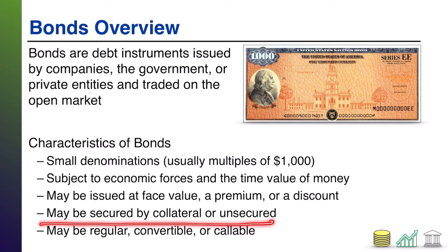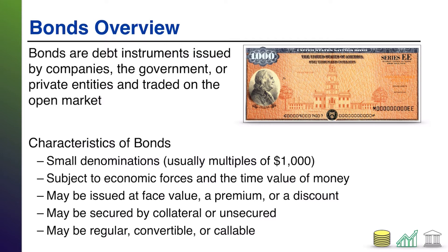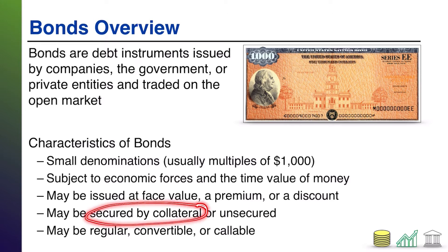Bonds may be secured by collateral or unsecured. Secured by collateral means there is an asset tied to the bond such that if the company fails to pay, the creditor has the right to claim that asset in lieu of payment. If it's unsecured and the company fails to pay, whoever holds that bond is out of luck. Collateralized bonds will probably pay less interest because they're less risky than unsecured bonds.